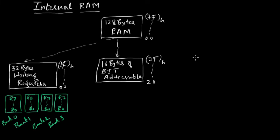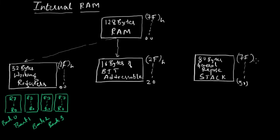The last classification is 80 bytes of general-purpose area, which is also called stack. This starts from 0x30 to 0x7F, which makes 80 bytes. If you want to store any data and retrieve it quickly, we can make use of this available stack.